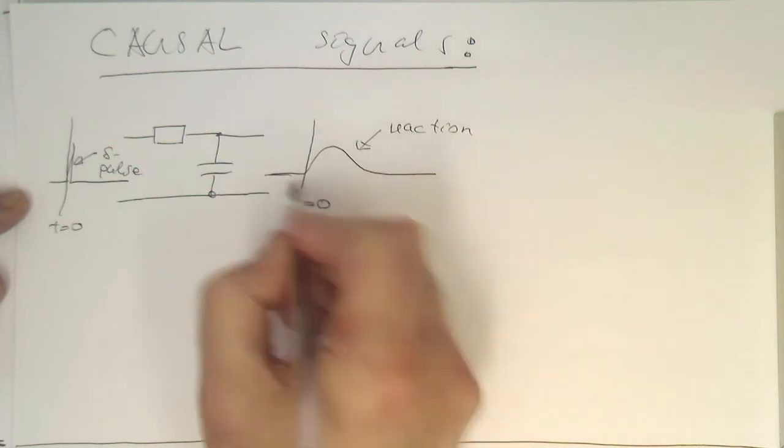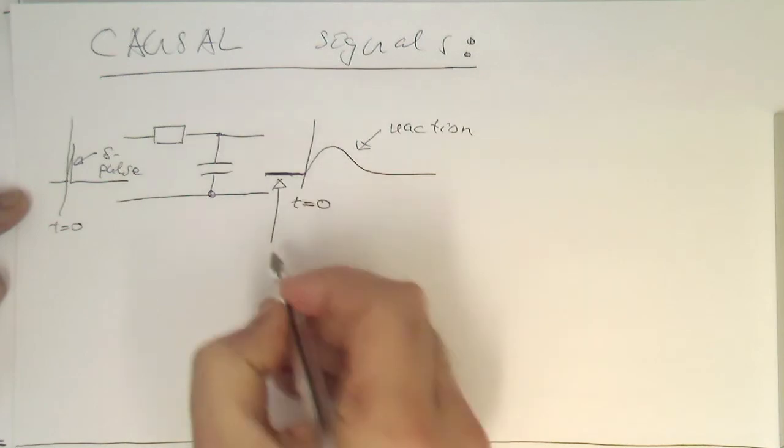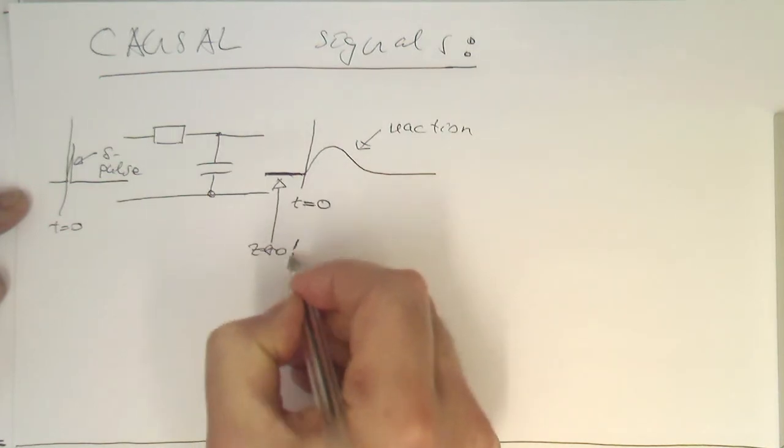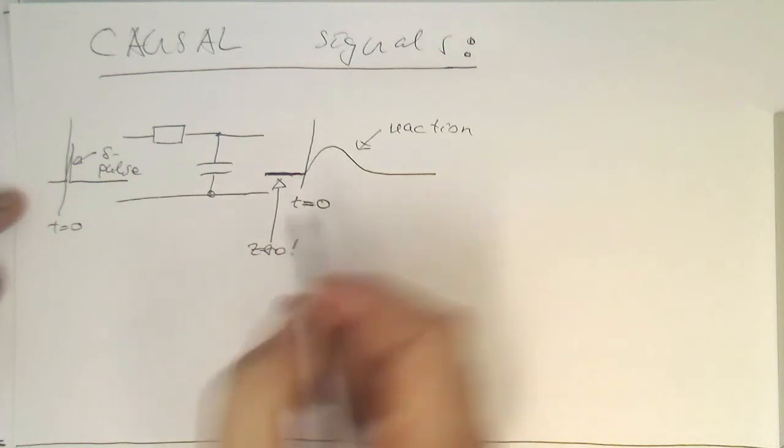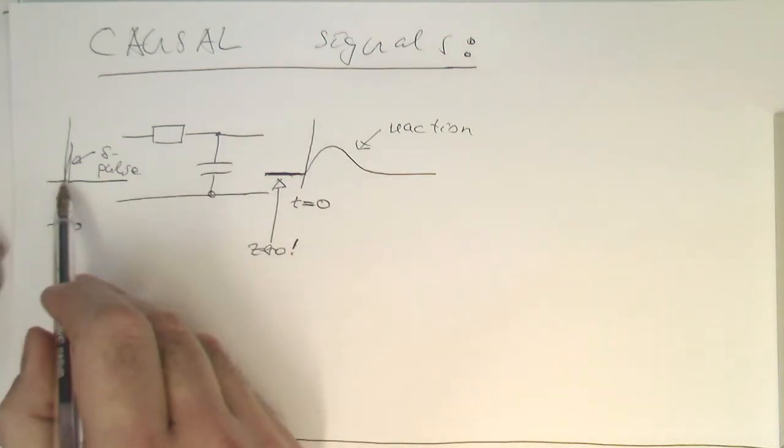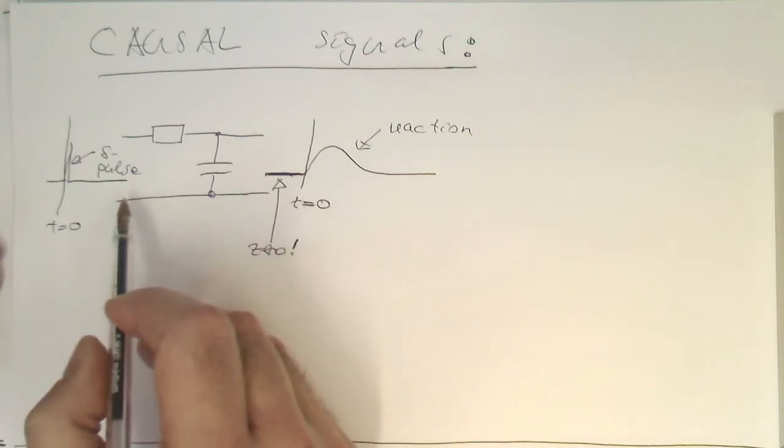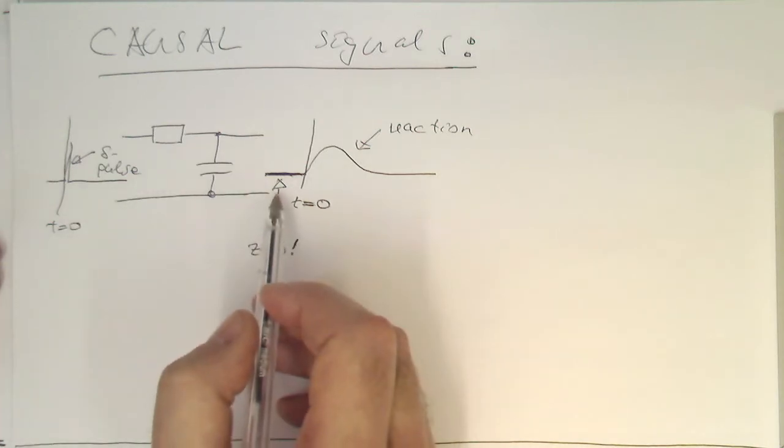Obviously, before the delta pulse here, this is zero. So this bit here is zero. For obvious reason, because the system does not know that the delta pulse is happening. So the system is not a psychic predicting basically what's going to happen.